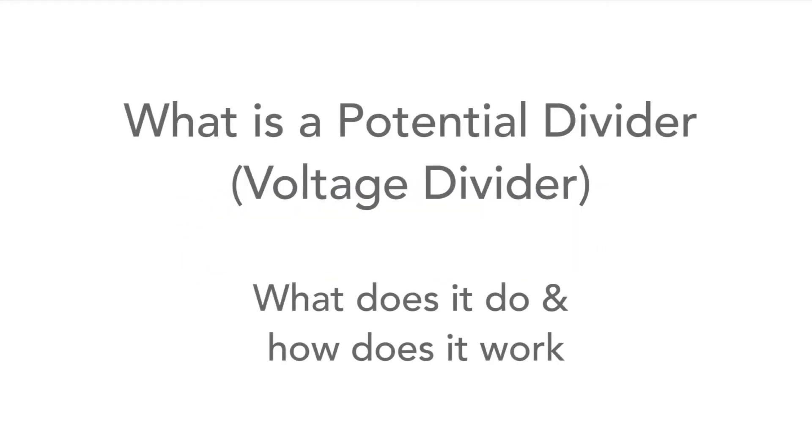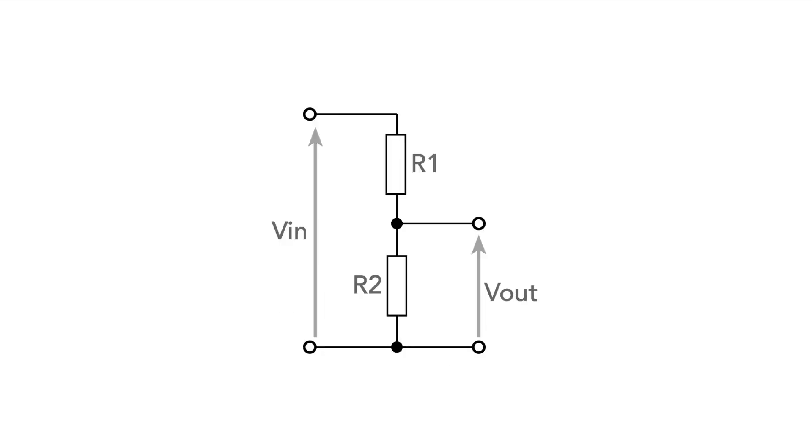The potential divider or voltage divider is a very straightforward circuit which is found in a large number of electronic circuits. As the name implies, it divides the input potential or voltage down to give a lower output voltage.